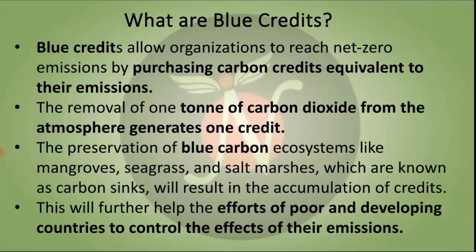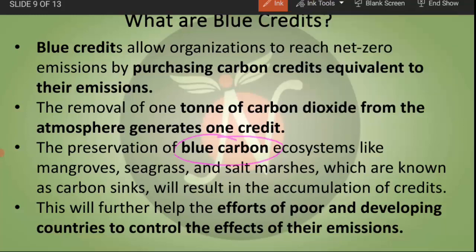Blue credits allow organizations to reach net-zero emissions by purchasing carbon credits equivalent to their emissions. The removal of one tonne of carbon dioxide from the atmosphere generates one carbon credit. The preservation of blue carbon ecosystems — like mangroves, seagrasses, and salt marshes, which are known as carbon sinks — results in the accumulation of credits. This further helps poor and developing countries to control the effects of their emissions. Blue carbon is related to water, which is why it is called blue carbon.